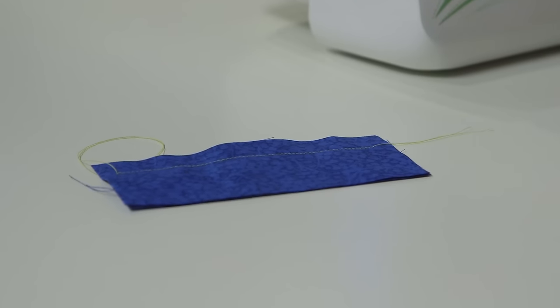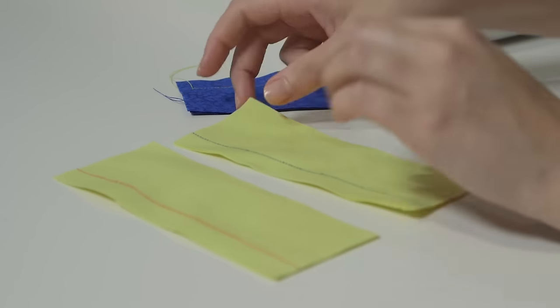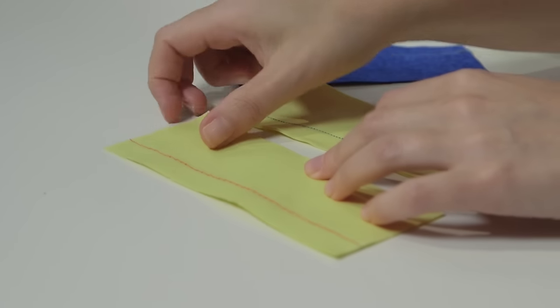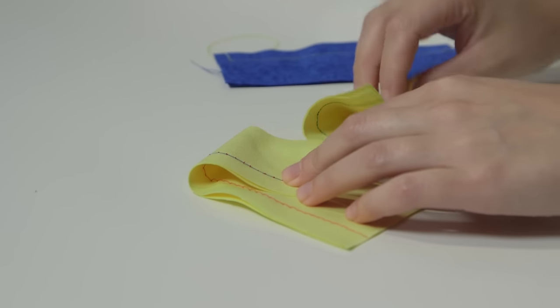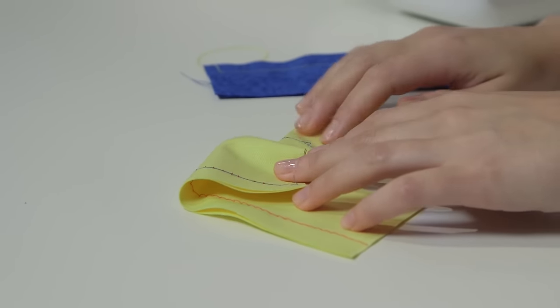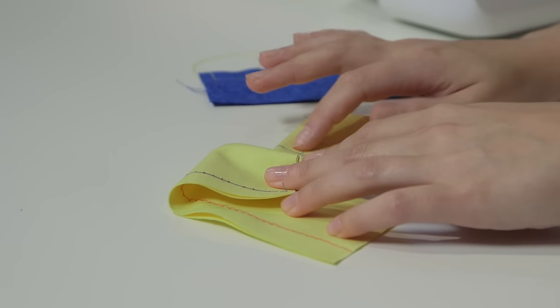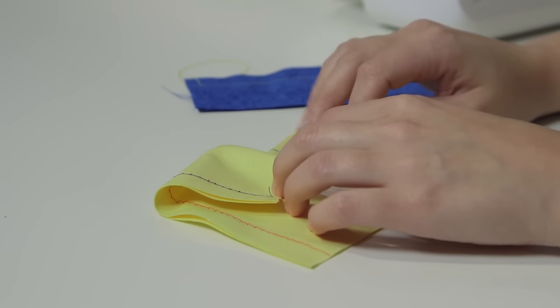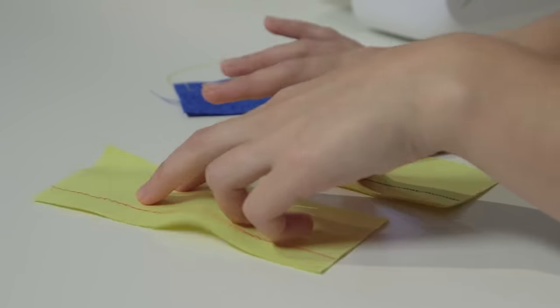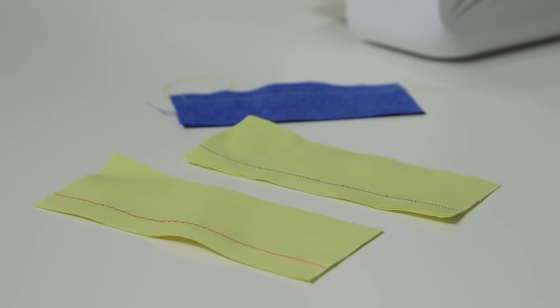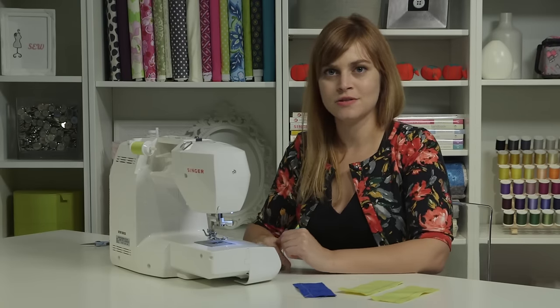If you sew and your test swatches look a little bit wonky or loopy, if you have loops on your thread, or if the backs look loose, or if there's kind of some thread nesting happening, then that probably means you need to re-thread your machine. So just unthread the top thread and the lower thread, re-thread them, and then do another test sewing swatch.